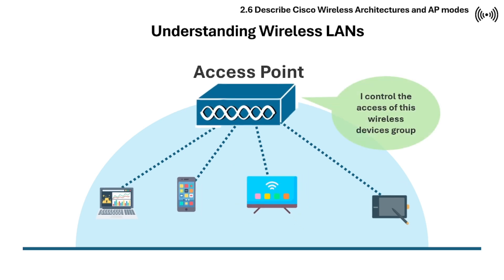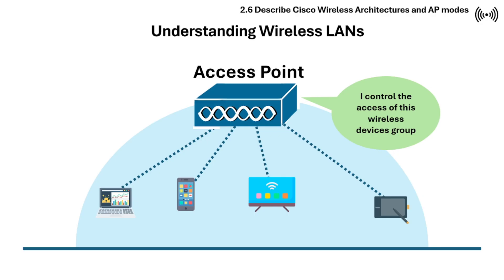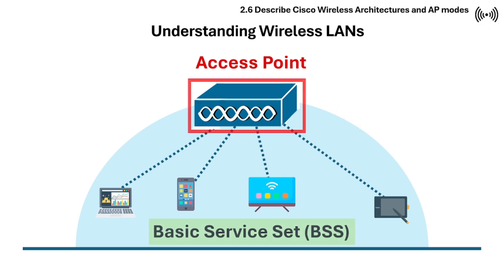A central device called an access point manages access to the group and settings of all devices. In the 802.11 standard, this type of network is called basic service set, or BSS. A basic service set is the fundamental building block of a WLAN and refers to a group of wireless devices that communicate with each other through a single access point.